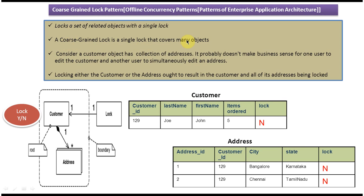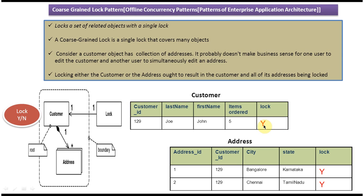As per the coarse-grained lock pattern, a single lock covers many objects. Once the DOO layer or business layer retrieves the customer information from the customer table and address table, we have to put lock equal to Y so that other persons can't change this customer information. Once user A takes the customer information, user A has to put Y so that when user B comes, he can't change any information in the customer table and address table.